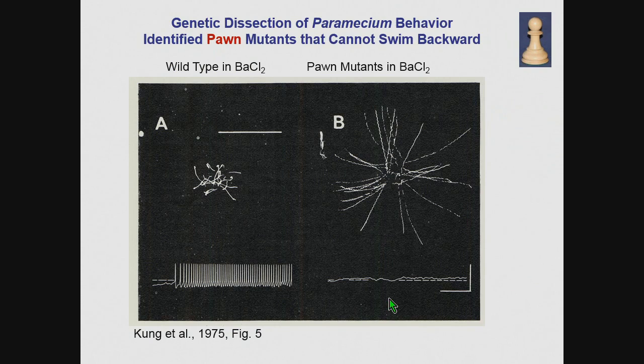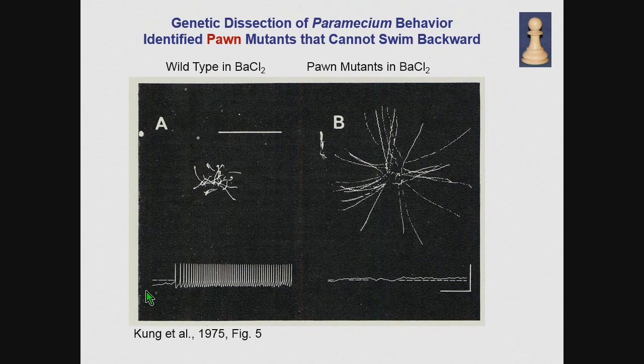The genetic dissection of paramecium behavior identified pond mutants that cannot swim backward. Here are wild-type cells in a pool of barium chloride. Barium chloride strongly depolarizes the cells, and for each of these little lines in this long-exposure micrograph, a cell moves, turns, moves, turns, moves, turns. If you put an electrode in the cell in barium, you'll see a train of action potentials, and for every action potential, there's a turn. If you put pond mutants into barium chloride, they will depolarize, but they will only swim in a straight line.